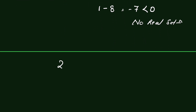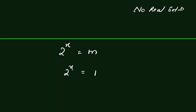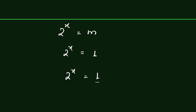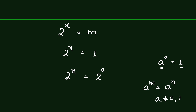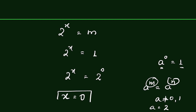So we consider 2 to the power x is equal to m, and m here is 1. Now instead of 1 we can write 2 to the power 0 — because a to the power 0 equals 1, so instead of 1 we write 2 to the power 0. Now when a raised to the power m equals a raised to the power n, and a is not equal to 0 or 1 — here a is 2 — then m equals n. That means x is equal to 0. So this is the solution.